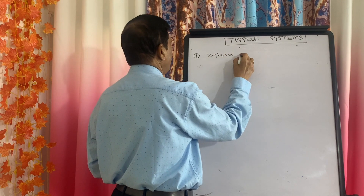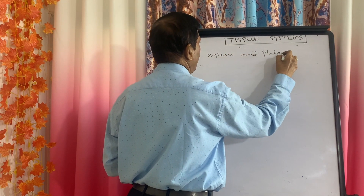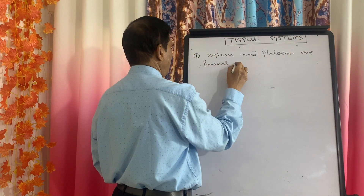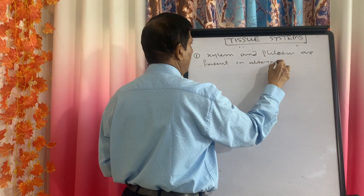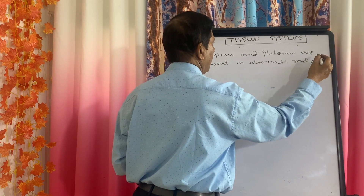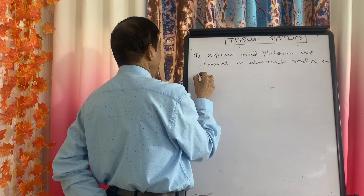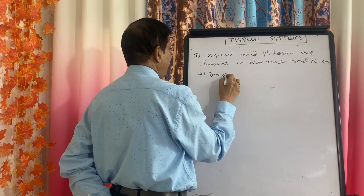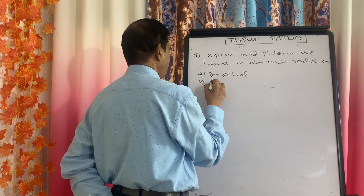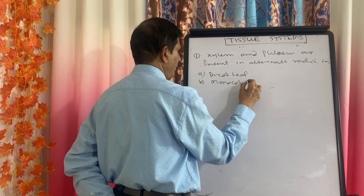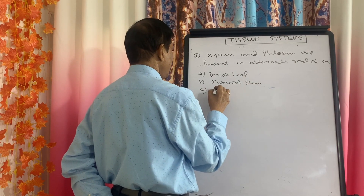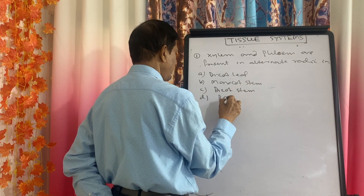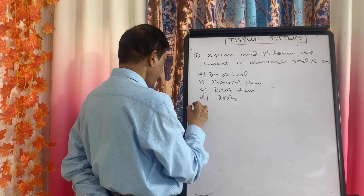Question: Xylem and phloem are present in alternate radii in which of the following? Choice A: dicot leaf, B: monocot stem, C: dicot stem, D: roots.